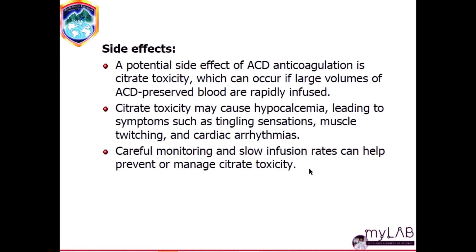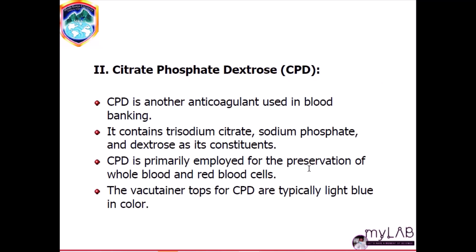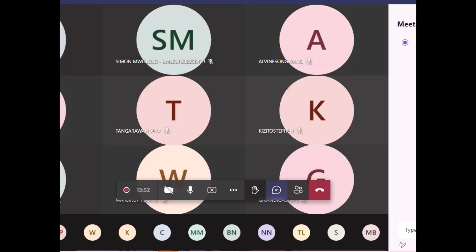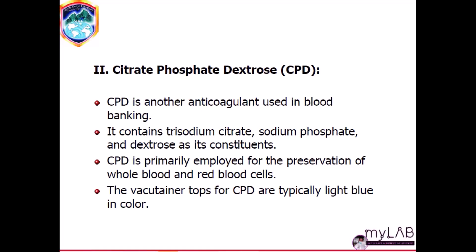Another commonly used anticoagulant in blood banking is CPD, or Citrate Phosphate Dextrose. From the name, you can tell it shares the citrate component with ACD. CPD contains trisodium citrate, sodium phosphate, and dextrose. It is primarily used for whole blood and red blood cells, and the vacutainer tops for CPD are usually light blue in color.